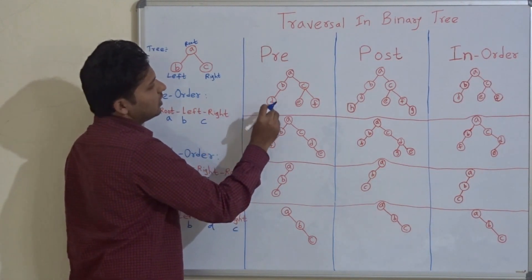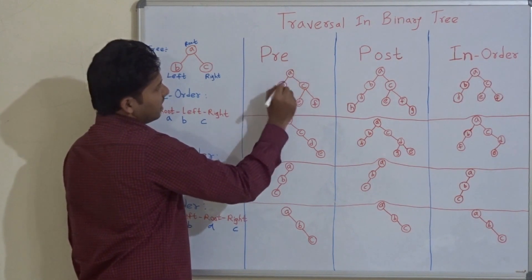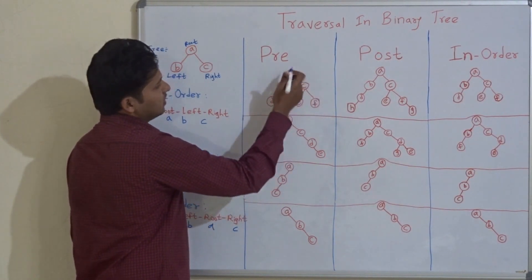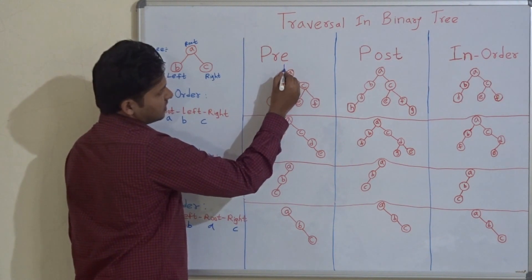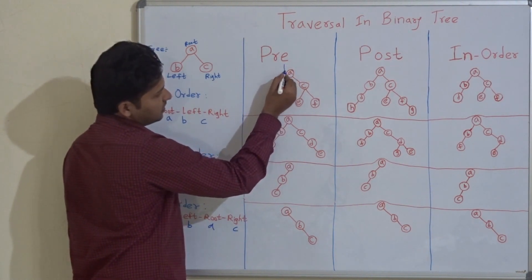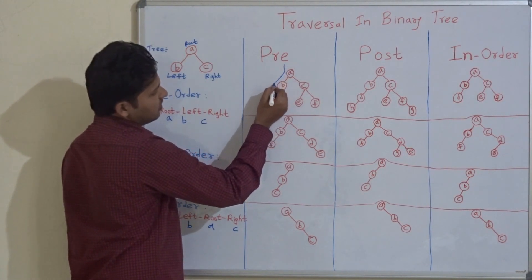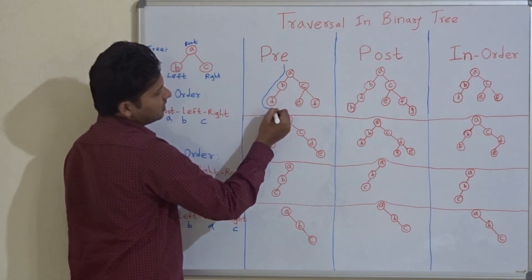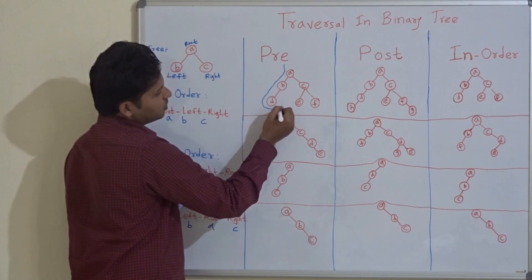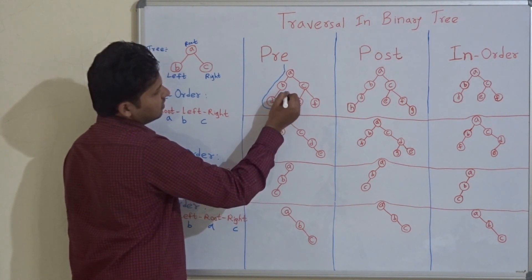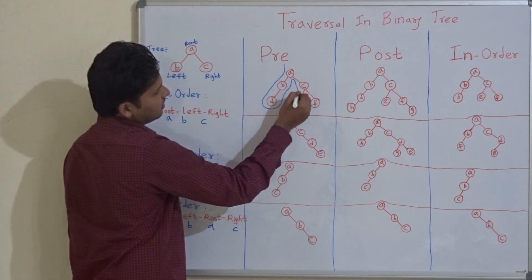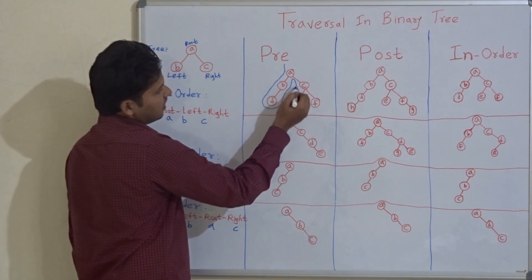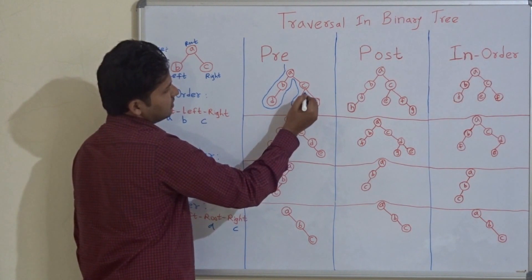First, we draw the traversal — just observe how I draw the traversal of this binary tree. I start from the left of the tree and follow the contour. I go down to the leftmost node, return, then go down again, continuing with the flow as I encounter each node.